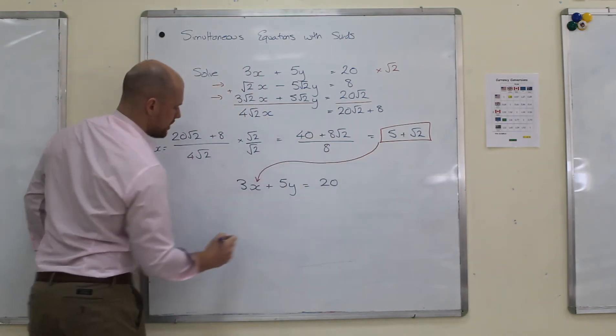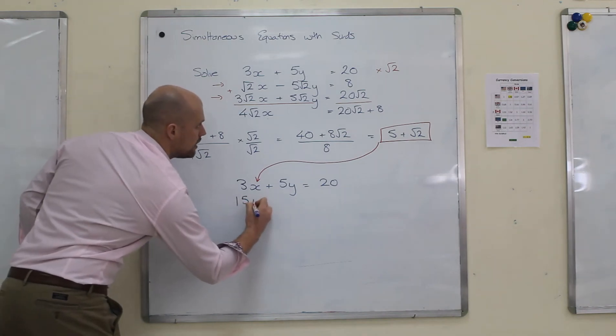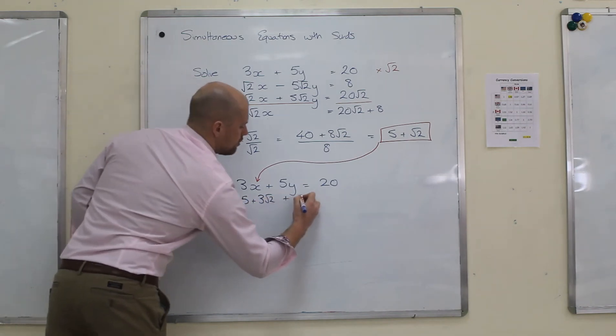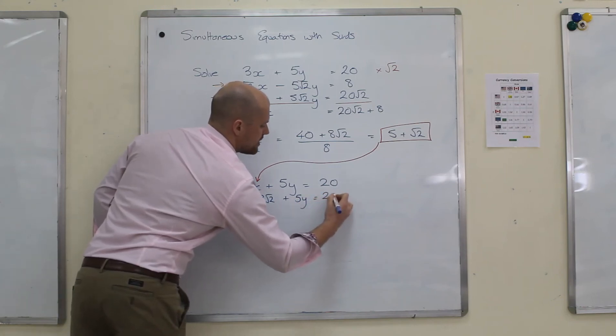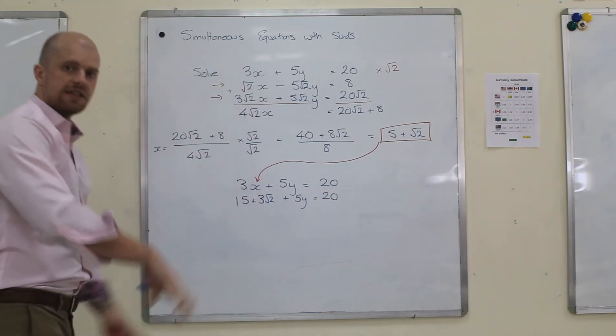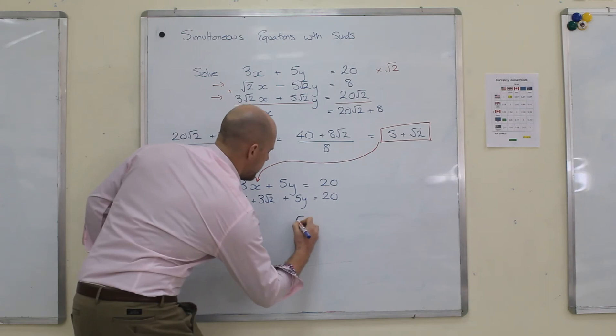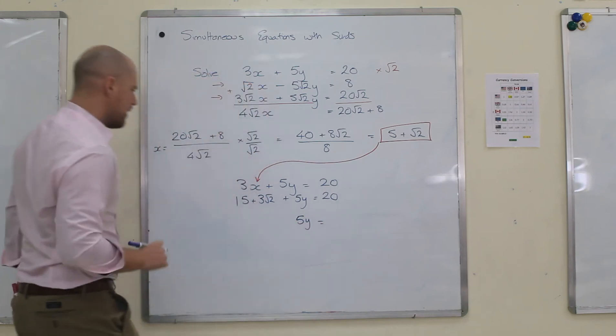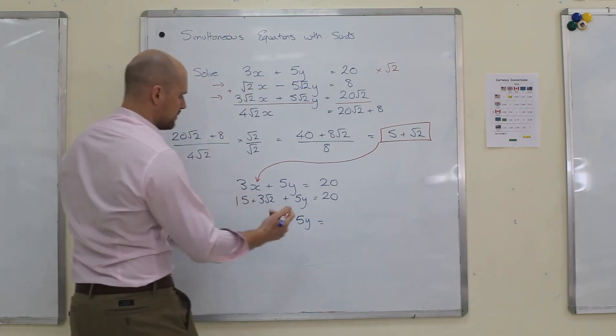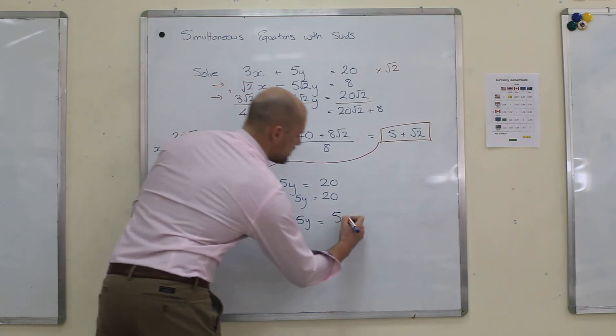And I times it by 3. So I get 15 plus 3 root 2 plus 5y equals 20. Minus it across. So 5y is 20 take away 15 is 5, and then minus 3 root 2.